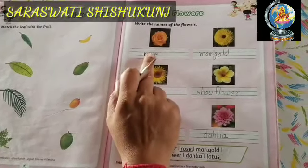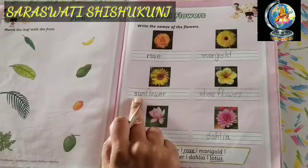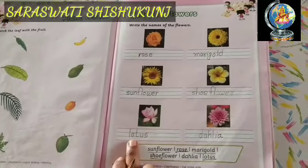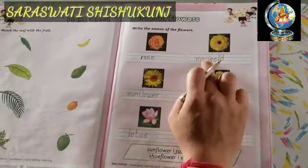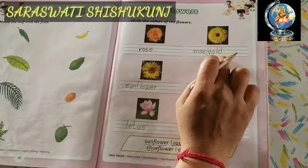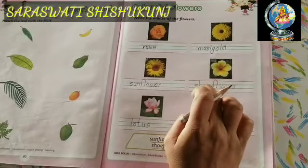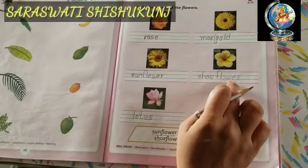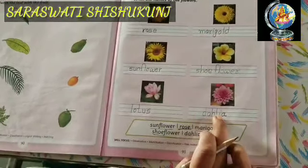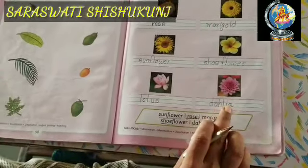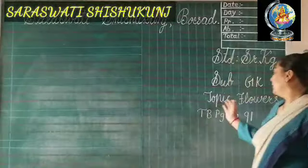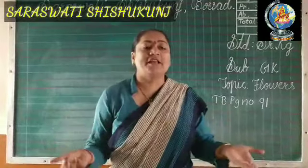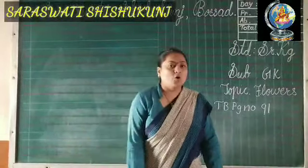First one is rose: R-O-S-E. Second one is sunflower: S-U-N-F-L-O-W-E-R. Third one is lotus: L-O-T-U-S. Fourth one is marigold: M-A-R-I-G-O-L-D. Fifth one is shoe flower: S-H-O-E-F-L-O-W-E-R. And sixth one is Dahlia: D-A-H-L-I-A. You have understood the topic flowers very well and can identify them easily whenever you see flowers now. Thank you kids.